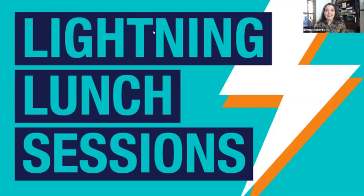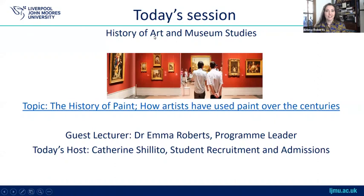Welcome to everybody joining us. This is the lightning lunch session on History of Art today. My name's Emma Roberts and I'm programme leader of BA and Foundation History of Art and Museum Studies at Liverpool John Moores University. The topic of my talk today is the history of paint, how artists have used paint over the centuries.